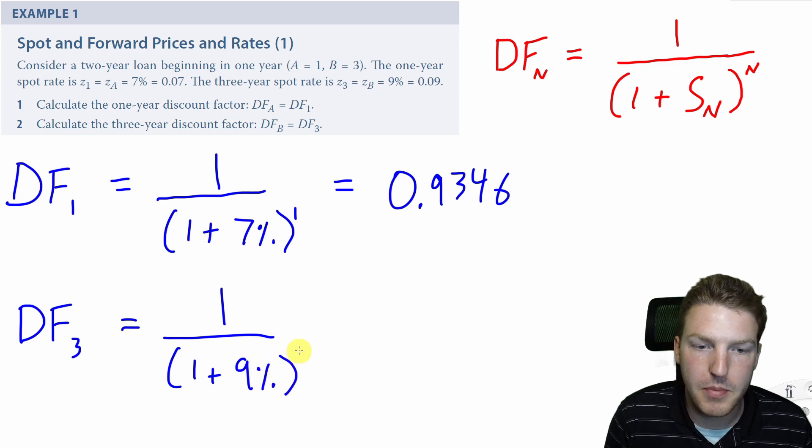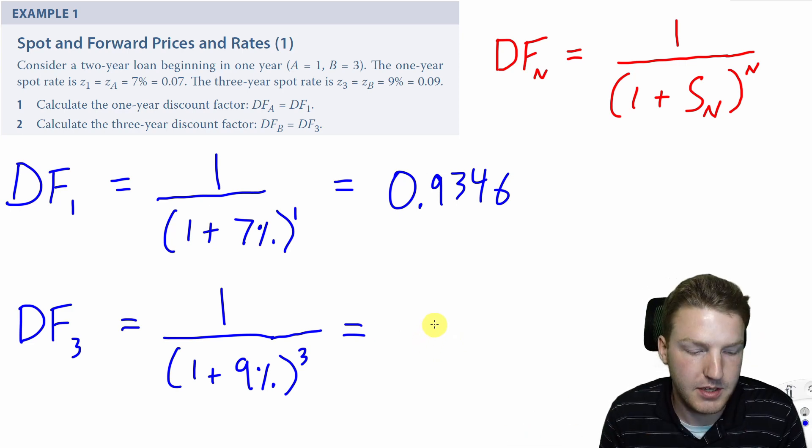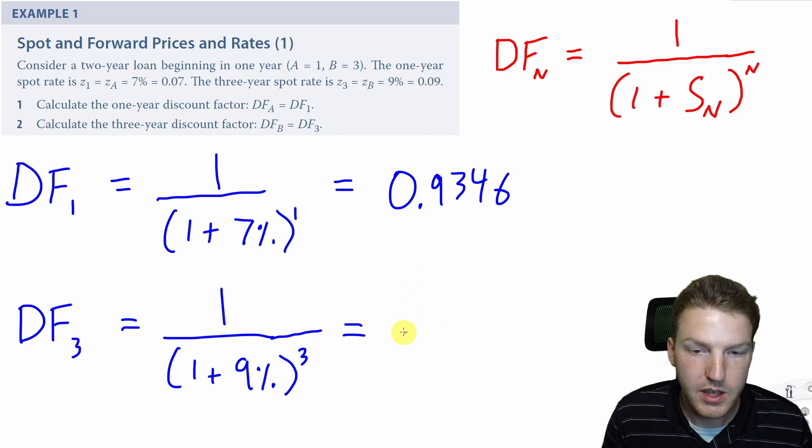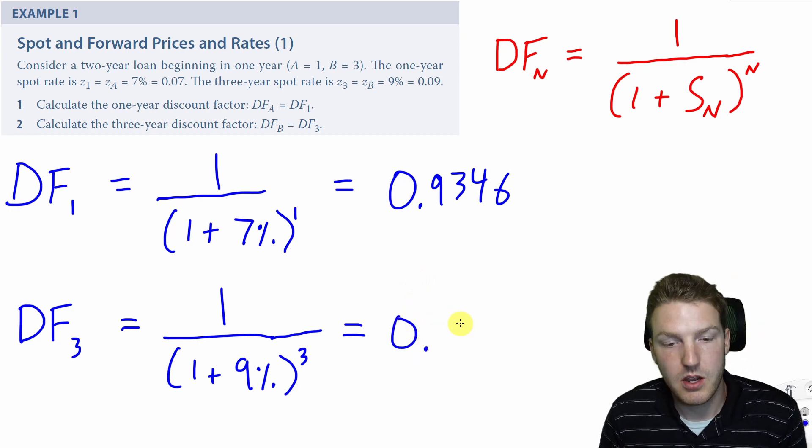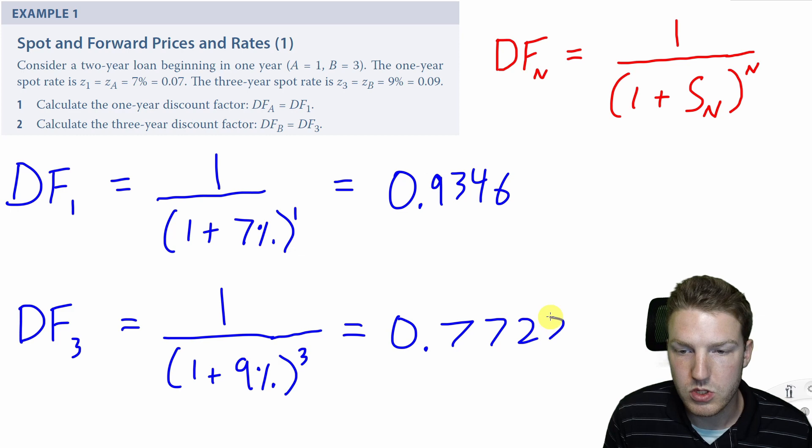But this time it's compounded three times because this dollar will be exchanged three years in the future. But because it's so far in the future, you would have to pay less money today to engage in this contract. And we find the value that we would have to pay today to be able to guarantee that we receive $1 three years in the future to be 77.22 cents.